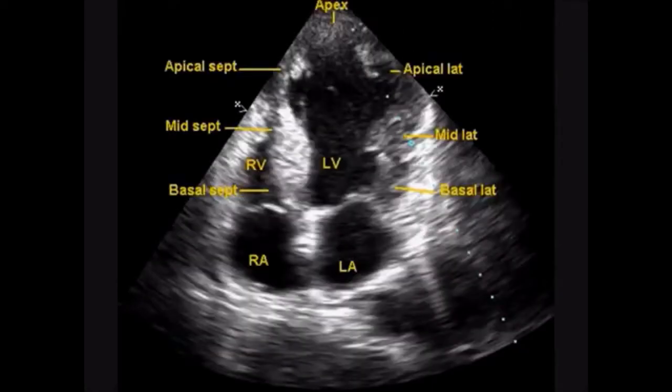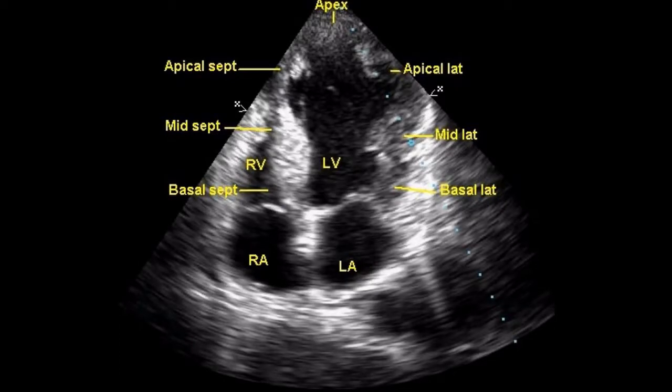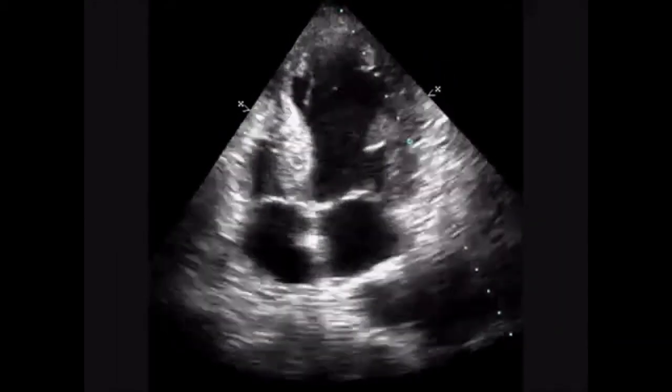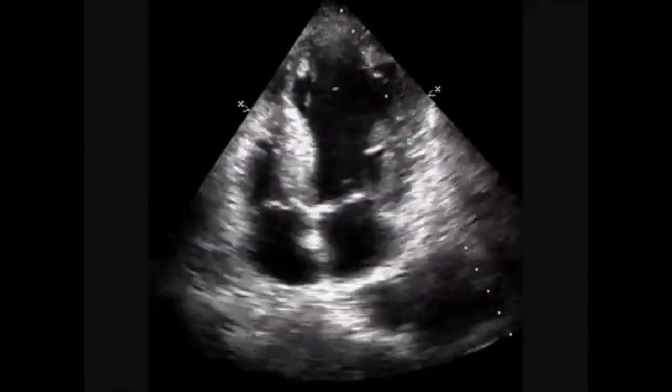Apical four chamber view shows apical, apical lateral, mid lateral, basal lateral, basal septal, mid septal and apical septal segments. Hypokinesia of apical septal and apical lateral segments are seen here.